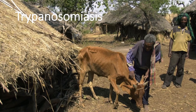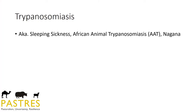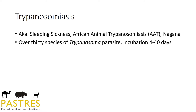Trypanosomiasis — also known as sleeping sickness, African animal trypanosomiasis, or nagana — has hundreds of other names, particularly in local vernaculars. There are 30 species of tryps, it's not just one, and the incubation period could be anywhere from 4 to 40 days. The reason for pointing this out is that it's not one thing — there's not a simple treatment that covers it all. It's a more problematic disease than that.